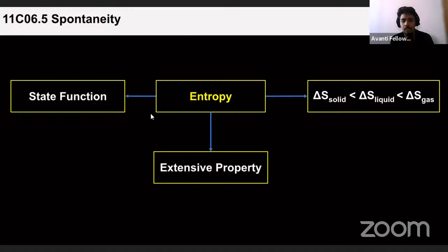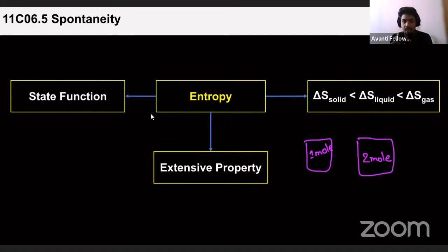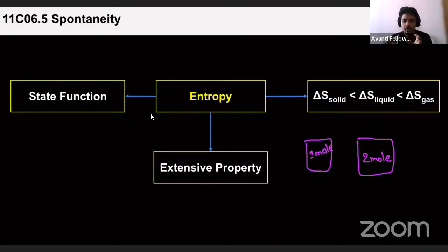Entropy is an extensive property — it depends on how much matter you are taking. One mole of gas in a container versus two moles of gas: as the amount of matter increases, entropy increases. With one mole of gas, collisions and energy of the system are different than with two moles of gas. The randomness of energy changes when you change the amount of matter in the system.